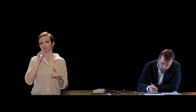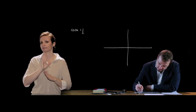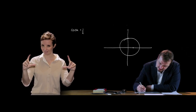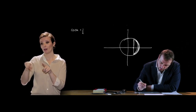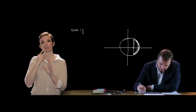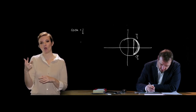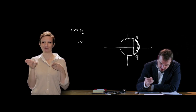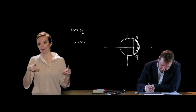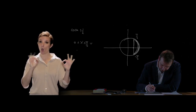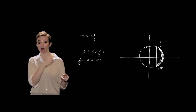Analogamente per cos x > 1/2 (o ≥ 1/2): con la circonferenza goniometrica, 1/2 corrisponde agli angoli π/3 e −π/3. La soluzione, nel caso maggiore o uguale, è x compreso tra 0 e π/3 oppure tra 5π/3 e 2π.